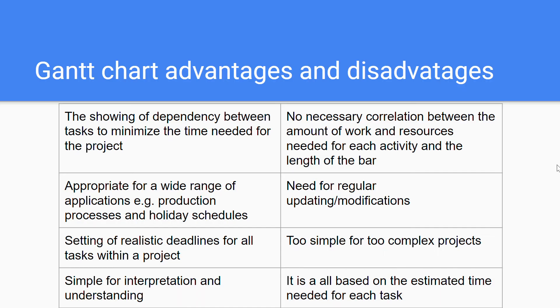So the advantages and disadvantages of this tool. The first advantage is that the showing of dependency between tasks to minimize the time needed for the project. And by this is also meant the sequential and parallel activities, so the managers can exactly see which task has to be done when, and this makes it more efficient, the whole process.